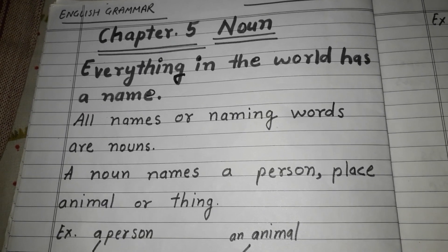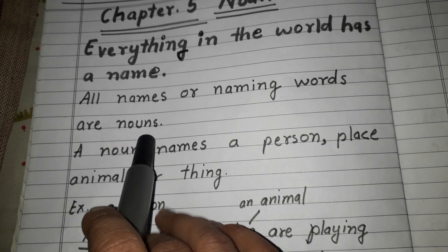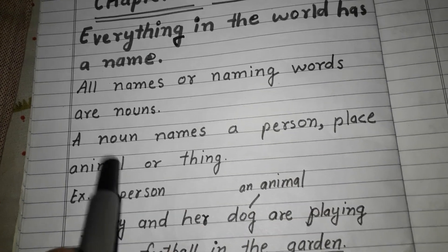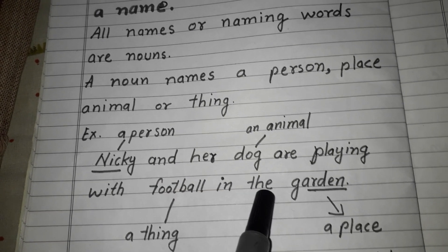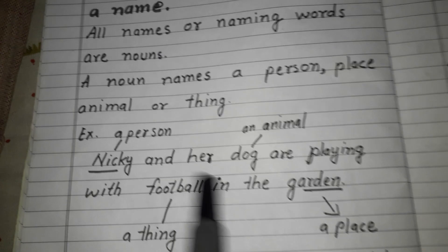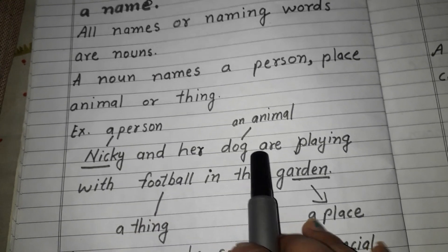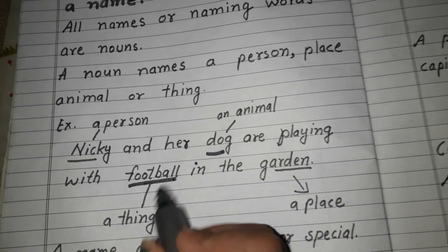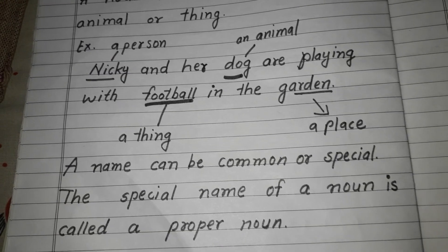We all know that everything in the world has a name. All naming words are called nouns. A noun names a person, place, animal, or thing. For example: 'Nikki and her dog are playing with a football in the garden.' Here, Nikki is a person, dog is an animal, football is a thing, and garden is a place — all are nouns.